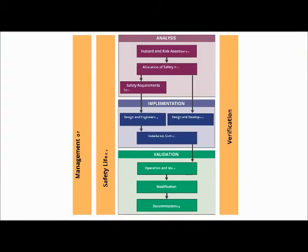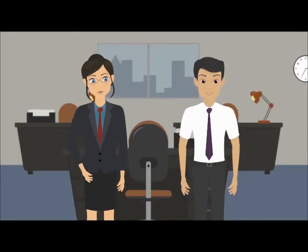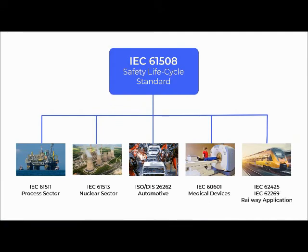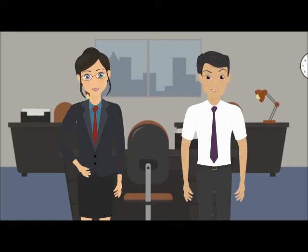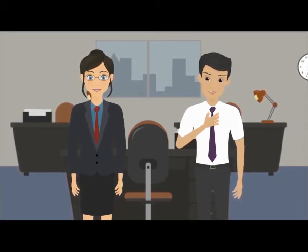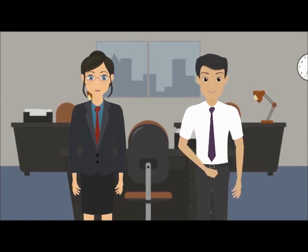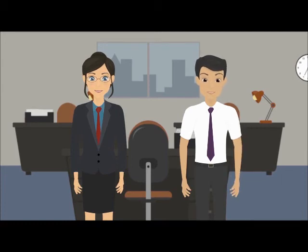There are standards which answer all your questions. What are those standards? There is an umbrella safety standard called IEC 61508 and sector-specific standards, like one for process, one for machinery, one for nuclear, etc. Which is the standard for process industries? It's called IEC 61511. So, if I'm in the process industry, I need to follow IEC 61508 and IEC 61511? Yes. They prescribe ways to meet the functional safety requirements? No — both standards are performance-based and not prescriptive.